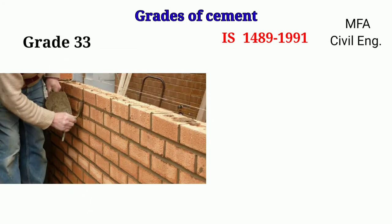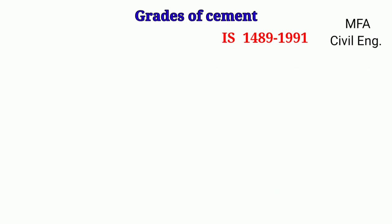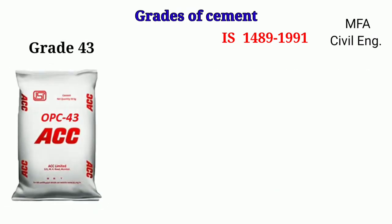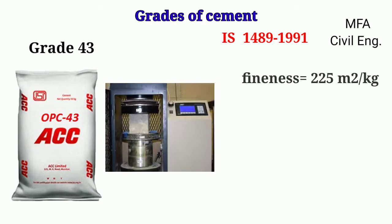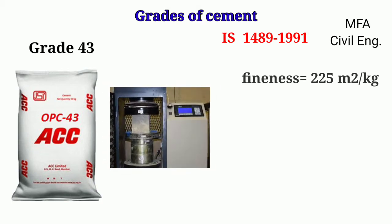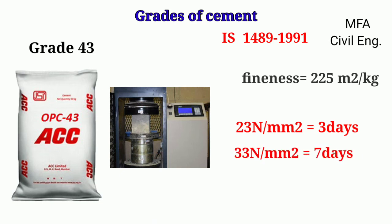For a 43 grade of cement, the specific area or fineness is about 225 m² per kg of cement. The compressive strength of a cube should not be less than 23 N/mm² for three days and 33 N/mm² for seven days.